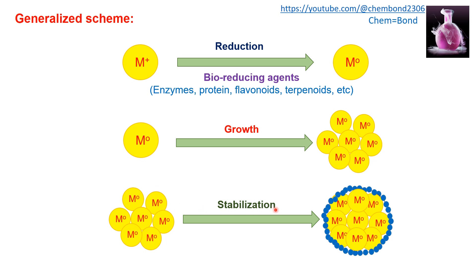The third step is stabilization. The agglomerated particles will have a stabilizing agent derived from plant extract that will coat and cap them. The size of the nanoparticles produced through agglomeration is fixed through the stabilizing agent, also called the capping or coating agent.